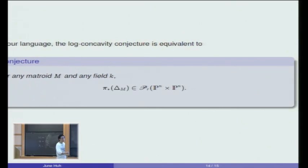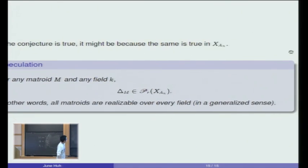If that log-concavity conjecture is true for all matroids, perhaps one reason for that might be this. For any matroid M and any field K, this matroid homology class lies in the space P of the permutahedral variety X_A_n. This would obviously imply the log-concavity conjecture by the framework we have developed so far. But something more than that. I'm almost saying that all matroids are realizable over every field if you view a matroid not as an integral homology class, but as a real or rational homology class. They should be realizable up to a multiple.